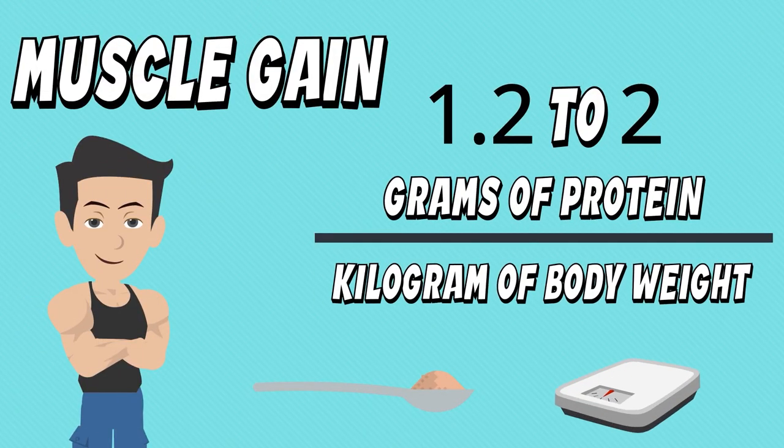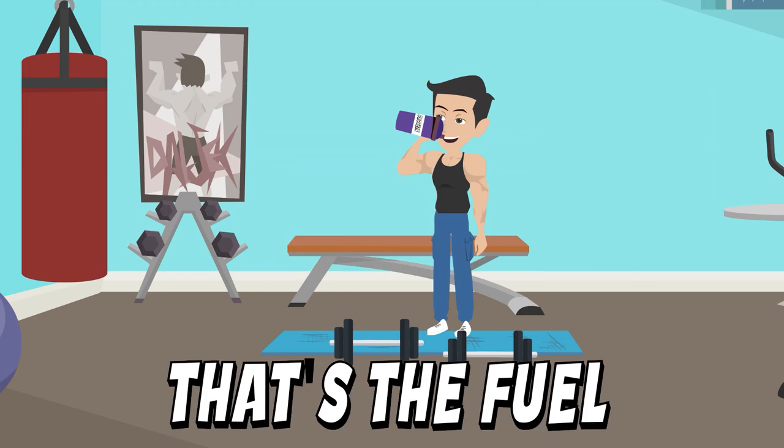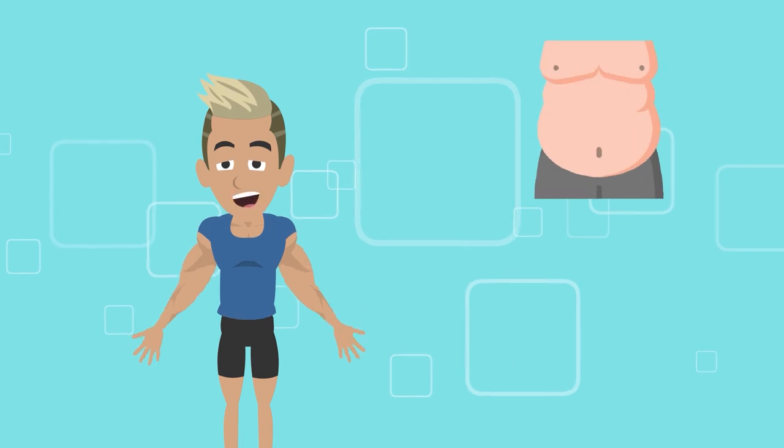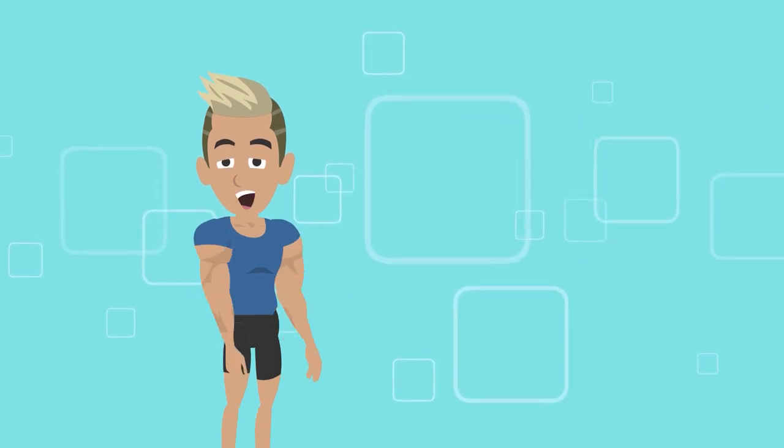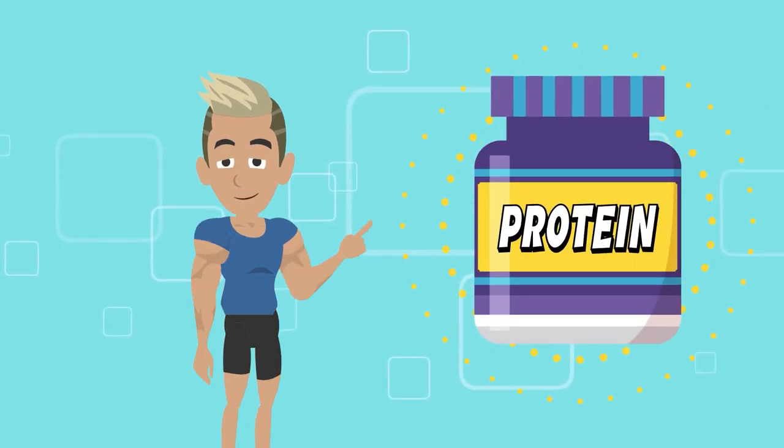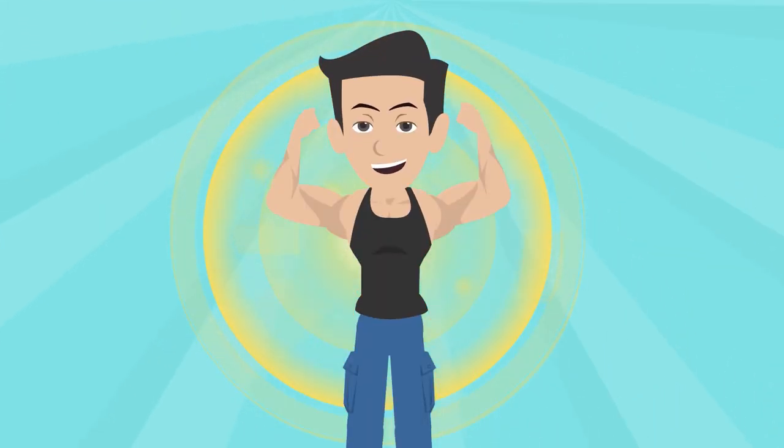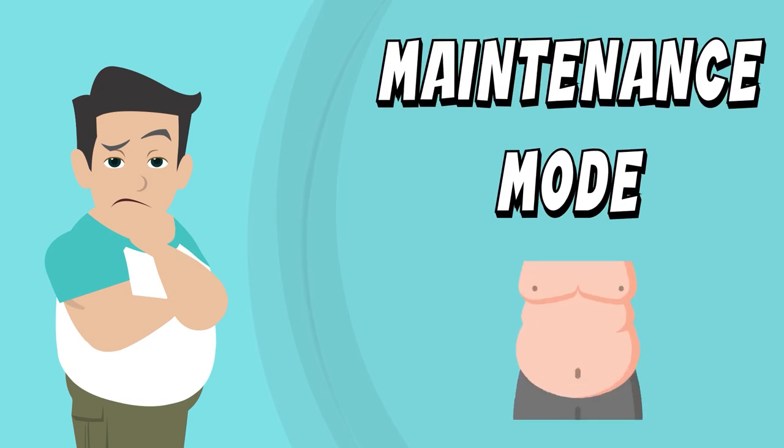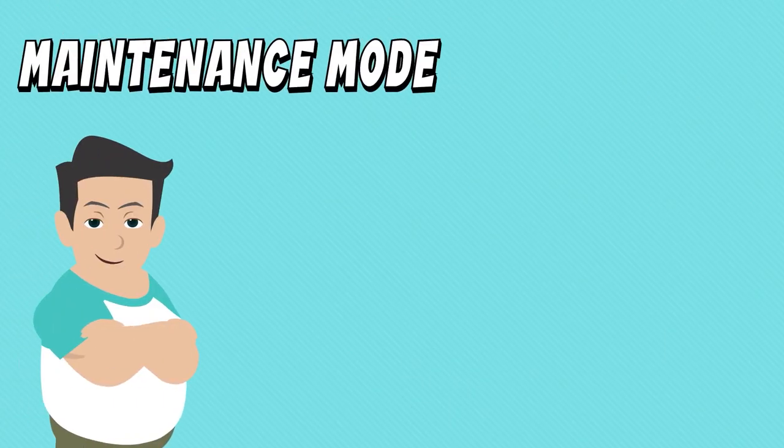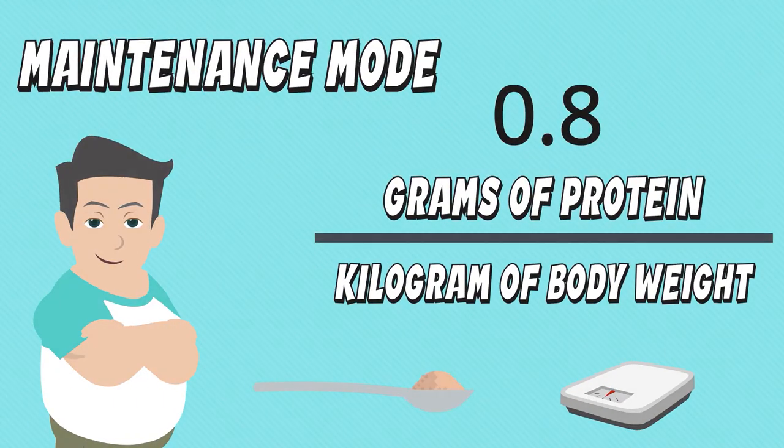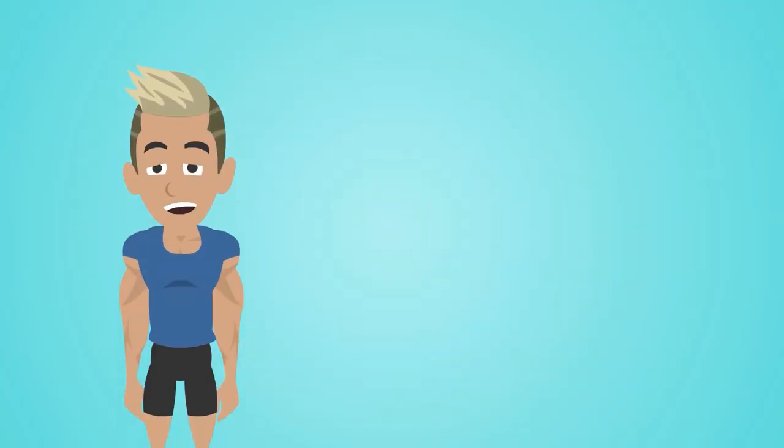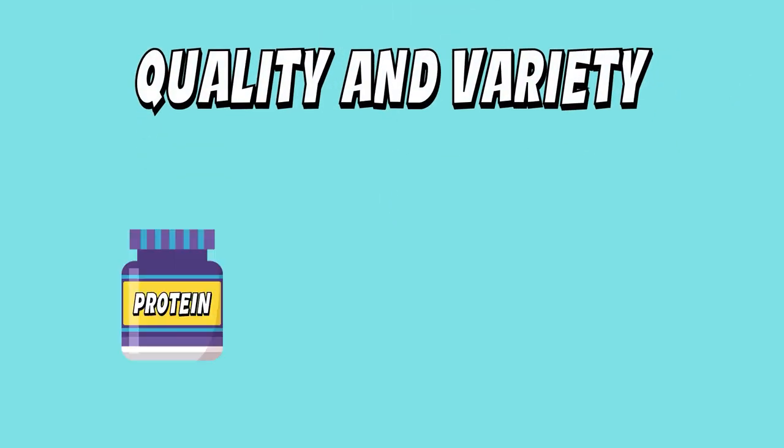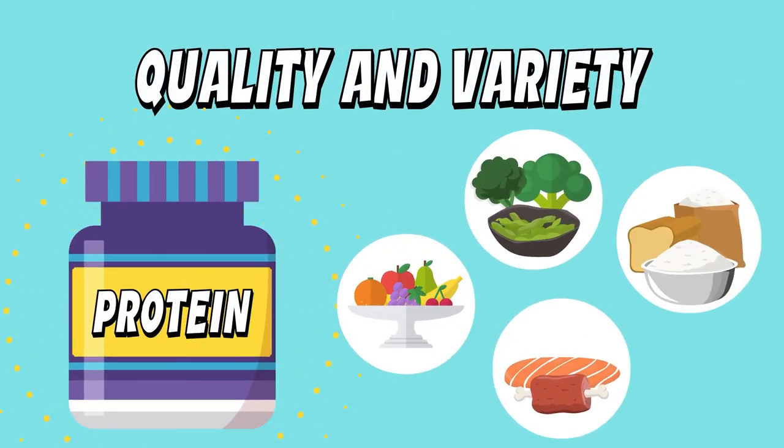That's the fuel your muscles need to ignite growth. Looking to shed unwanted fat? Protein can be your secret weapon. Aim for the higher end of the range to preserve muscle mass while torching those pounds. If you're in maintenance mode, aim for a solid 0.8 grams per kilogram to keep those gains locked in.